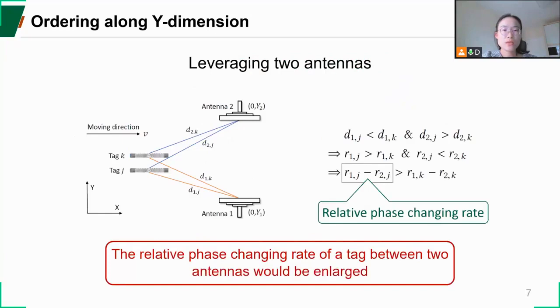As we know in real indoor scenarios, tag's phase is easily affected by surrounding noise. To further increase the final accuracy, we propose to employ two antennas placed at both sides of the conveyor. Then given two tags j and k, if tag j is closer to antenna 1 than tag k, we can easily infer that tag j is farther from antenna 2 than tag k. So here the relative phase changing rate of tag j would be larger than that of tag k. Besides, the difference of a tag's phase changing rate between two antennas would be enlarged compared against the case when only one antenna is adopted.